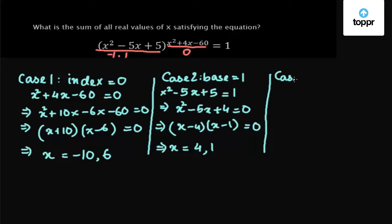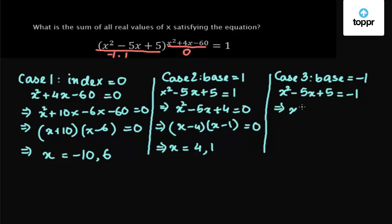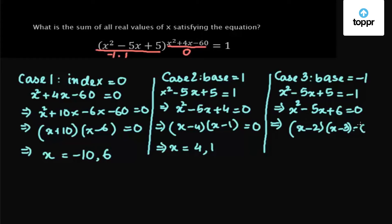Case 3: when the base equals -1, we have x² - 5x + 5 = -1, which gives x² - 5x + 6 = 0. Factorizing, we get (x - 2)(x - 3) = 0, so x = 2 and x = 3.